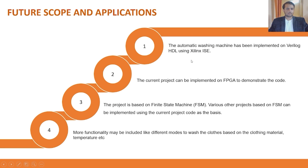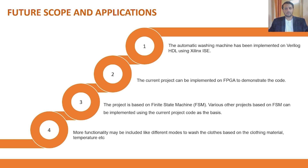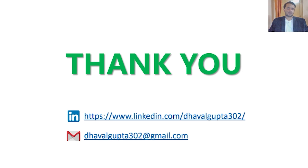We have implemented the code in Verilog HDL using Xilinx ISE. You can implement the code on an FPGA to demonstrate it with hardware. Since this is an example of a finite state machine, the code can be used as a basis to implement other FSMs like traffic lights or vending machines. You can also add more functionality to the washing machine, such as features based on clothing material, temperature, or other parameters as a future scope. Thank you all for watching — please share and like the video, and drop any queries in the comments below.